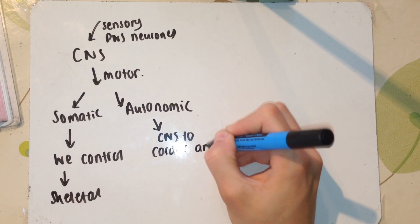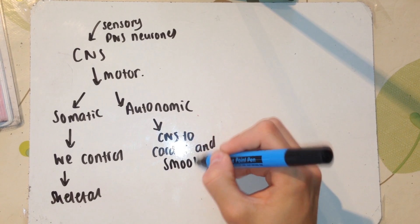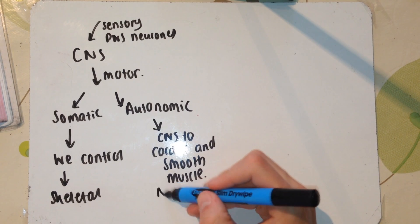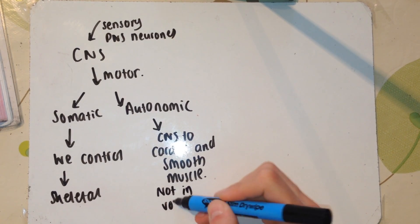This includes the heart muscle, the cardiac. We can't choose when our heart beats; it just happens. And then also the smooth muscle, like the gut and peristalsis. We can't make this happen; it just happens anyway.